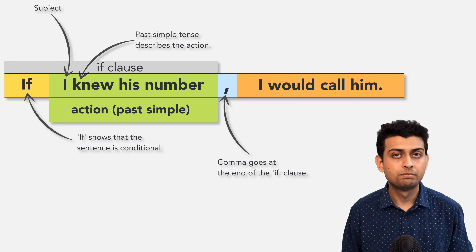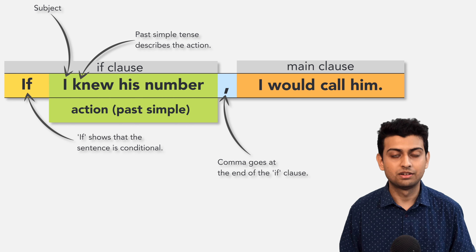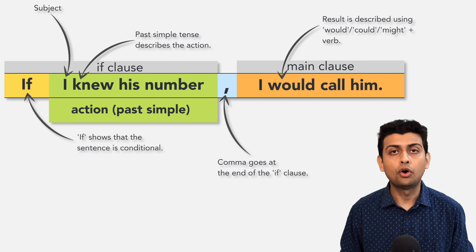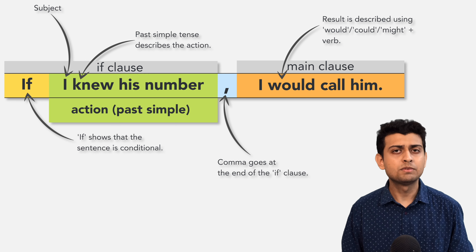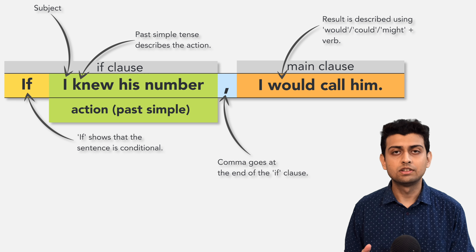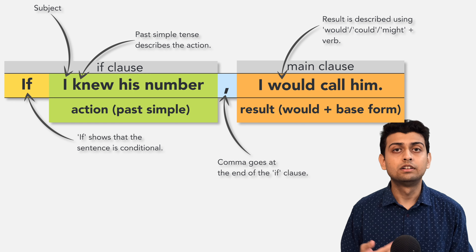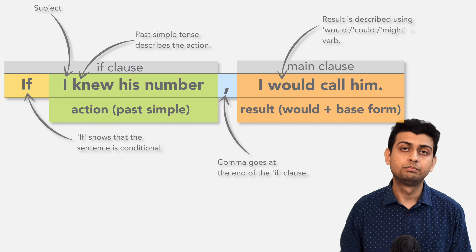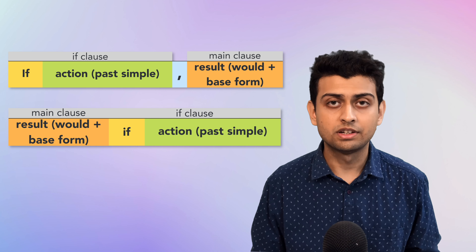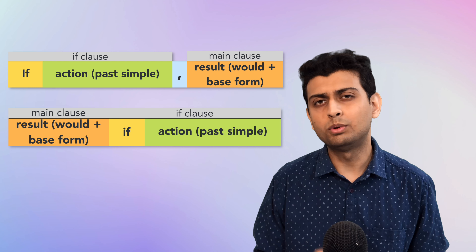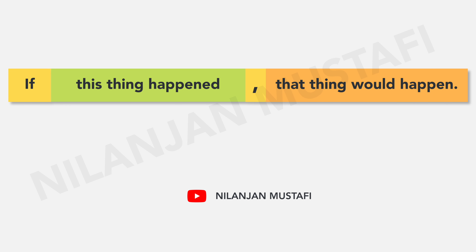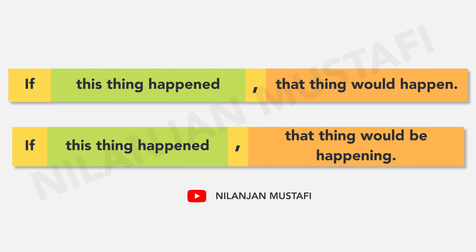After the if clause, we put a comma and then the main clause showing the result. 'I would call him' is the result. We always use 'would', 'could', or 'might' in second conditional sentences — most of the time it is 'would'. After would, could, or might, we use the base form of a verb to show the result. You can also change the order by writing the main clause first and then the if clause, but in that case don't put a comma. For an ongoing action, the structure is: 'If this thing happened, that thing would be happening.'